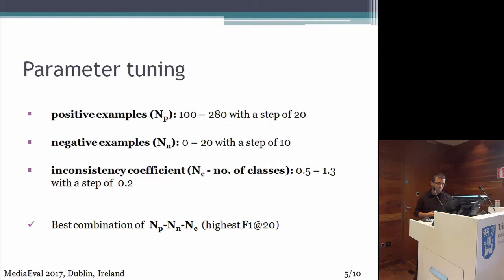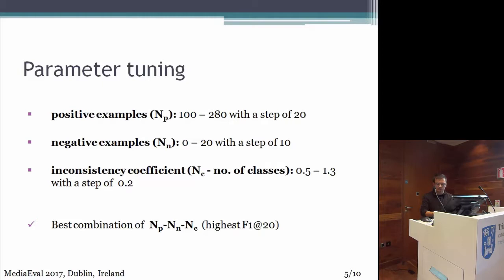For parameter tuning: for the positive examples, we varied from 100 to 180 with a step of 20. For negative examples, we varied the number from 0 to 20 with a step of 10. And for the number of classes given by the inconsistency coefficient, from 0.5 to 1.3 with a step of 0.2. We had a huge number of combinations yielded by these parameters, and we selected on the DevSet the best combination which yielded the highest F1 metric score.